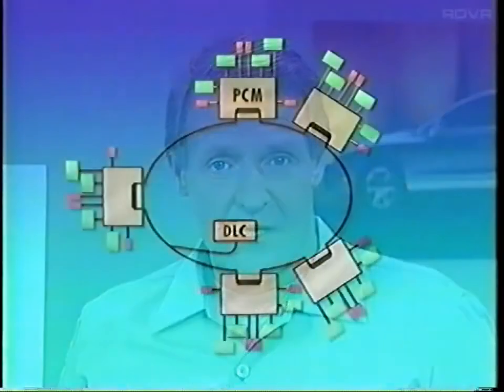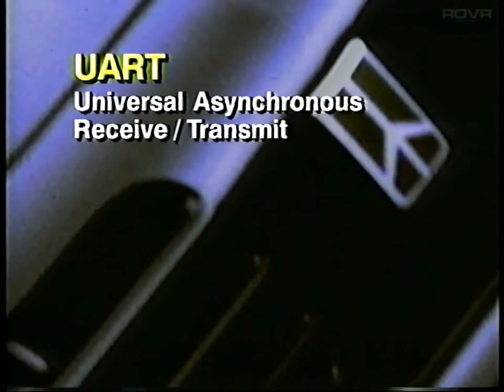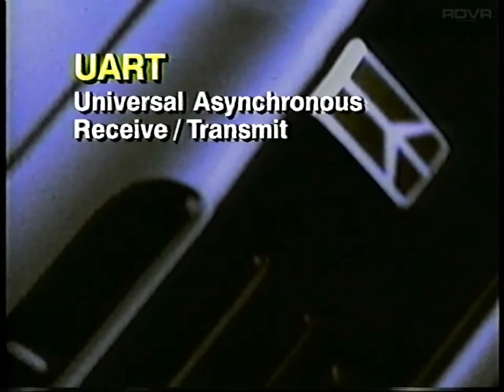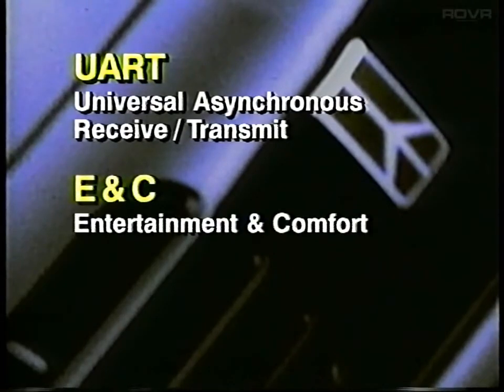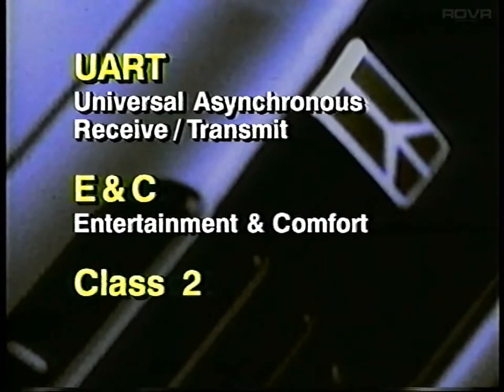There are actually several types of serial data lines. We'll look at the three main ones. The one that's been used through 1995 for Oldsmobile PCM data lines is the EWERT bus. EWERT stands for Universal Asynchronous Receive-Transmit, meaning all modules can both receive and transmit. The Entertainment and Comfort, or E&C bus, is used in most Oldsmobiles for air conditioning, heater, and audio modules and controls. Class II is a new kind of bus that will replace or complement the EWERT line in all 1996 Oldsmobiles. These three types of buses have important differences you'll need to understand.